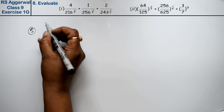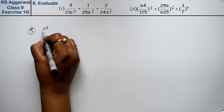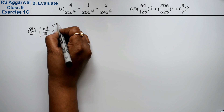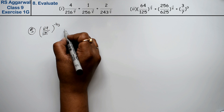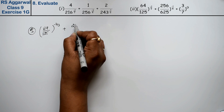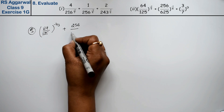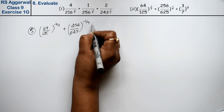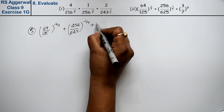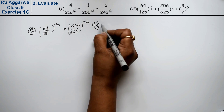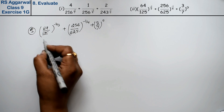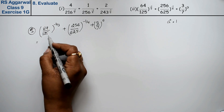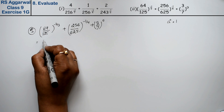Now the second part is: 64 upon 125 to the power minus 2 upon 3, plus 256 upon 625 to the power minus 1 upon 4, plus 3 upon 7 to the power 0. Friends, first let's make the powers positive. And as we know, anything to the power 0 equals 1. So the zero power term becomes 1.